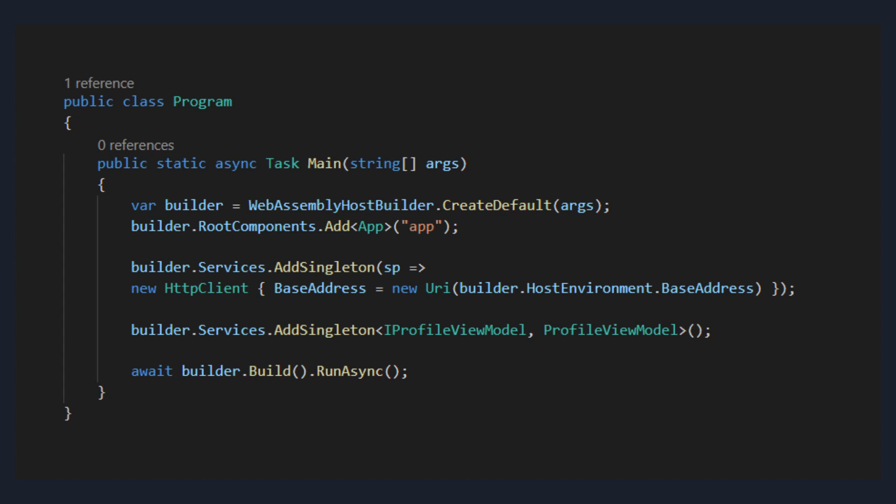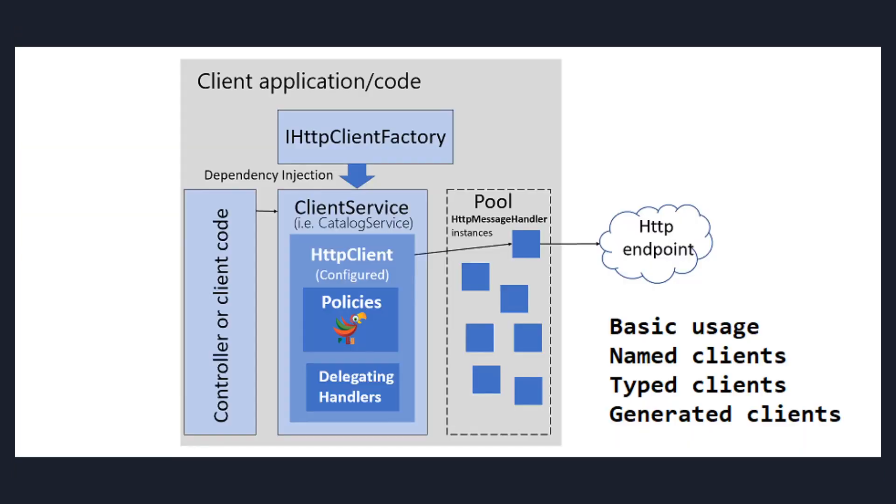But the problem with adding HttpClient as a singleton service is that you can run into a DNS change issue. That means if you change the URL of your base address, you'll have to kill your application in order to get the new address for your Web API. To fix these issues, .NET introduced HttpClientFactory.